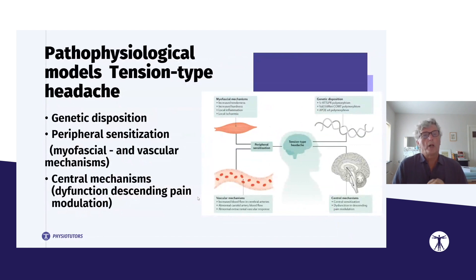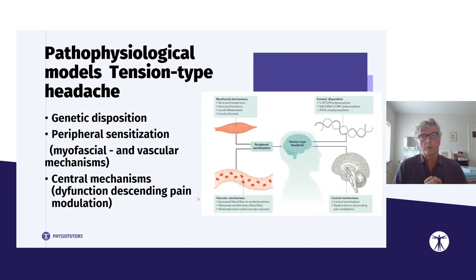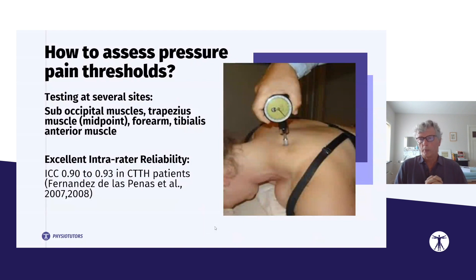The pathophysiological models for tension-type headache are described in an article by Ashina, 2022. This article describes four models: genetic disposition, peripheral sensitization, and central mechanisms. To test both peripheral and central sensitization in patients with headache, you have to test several sites.